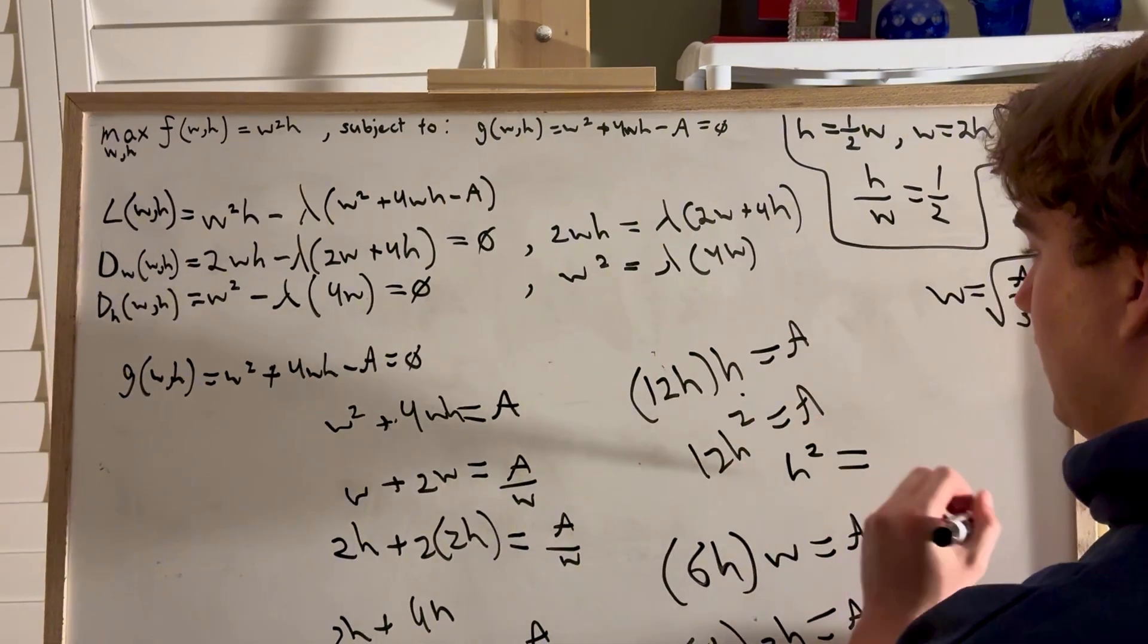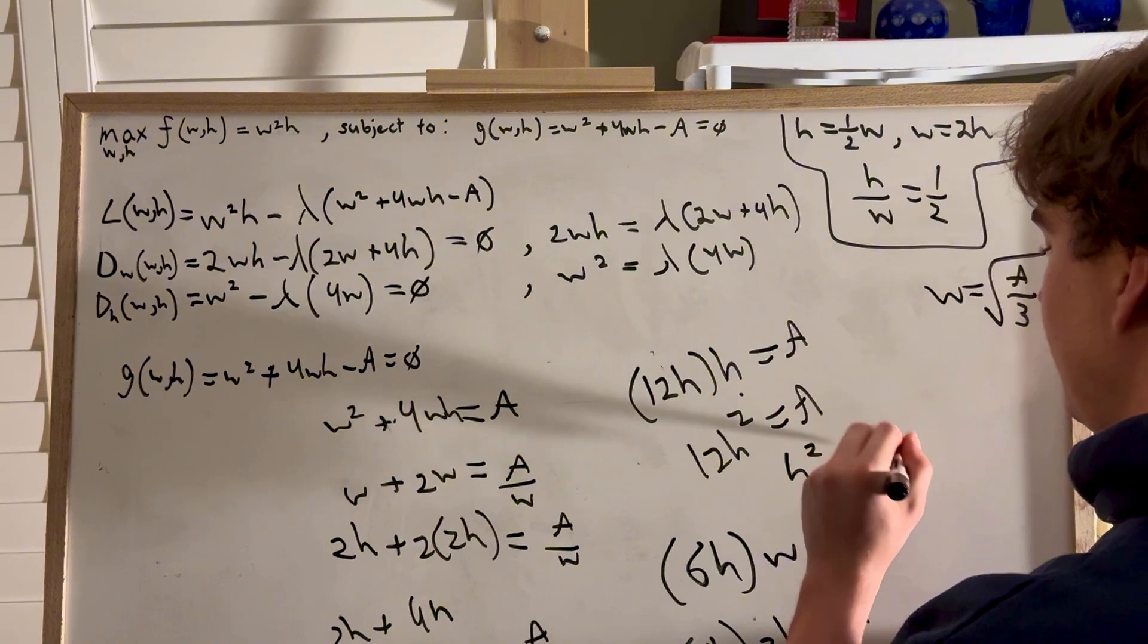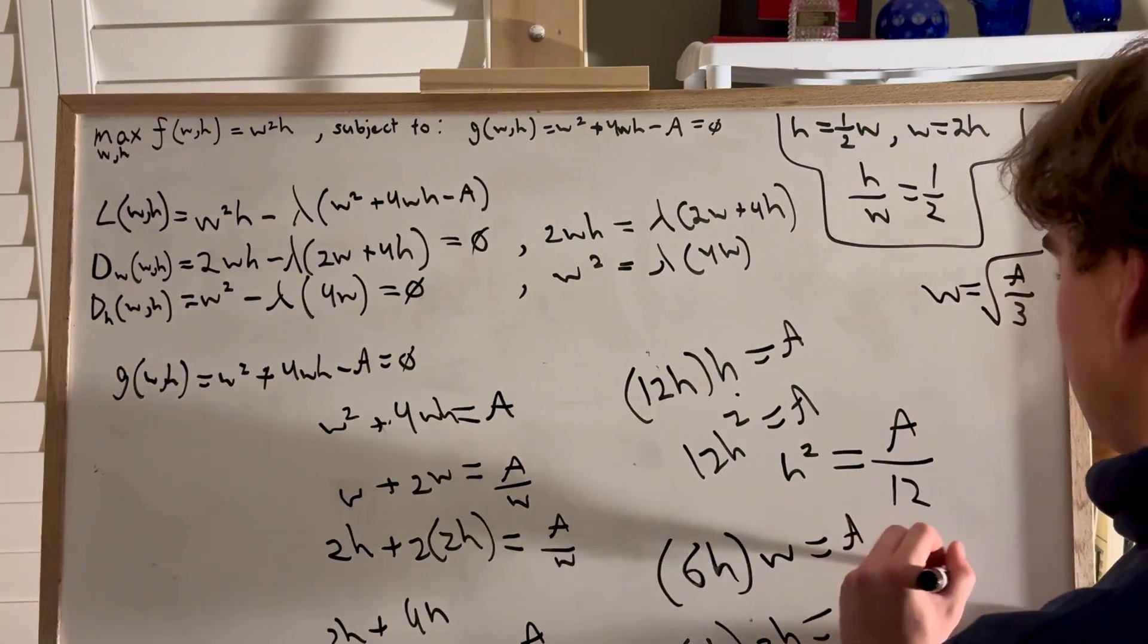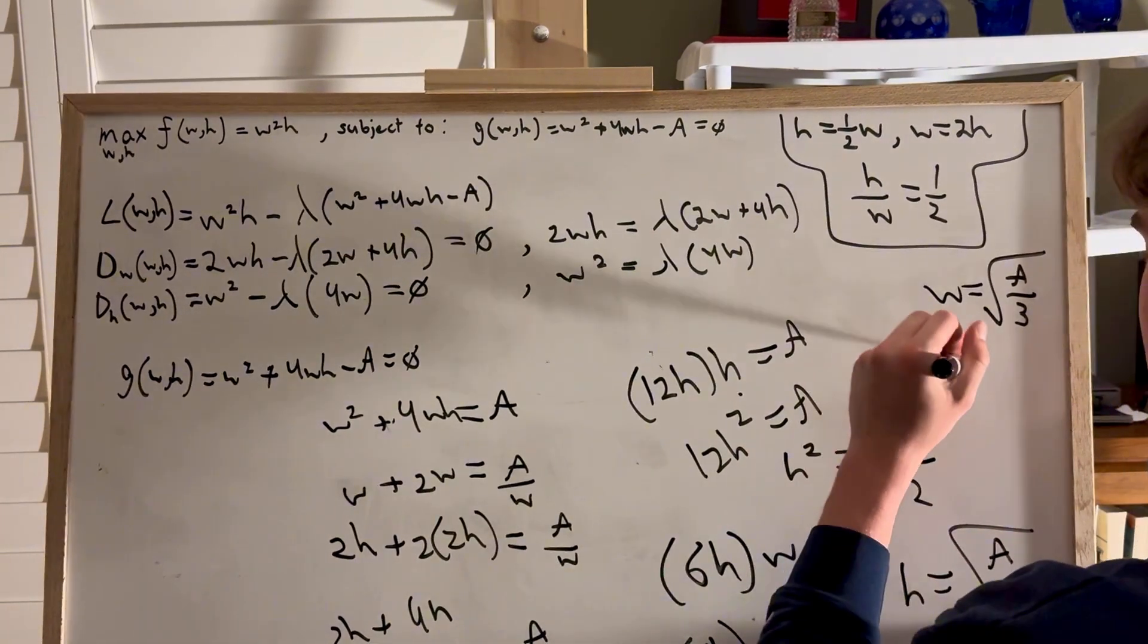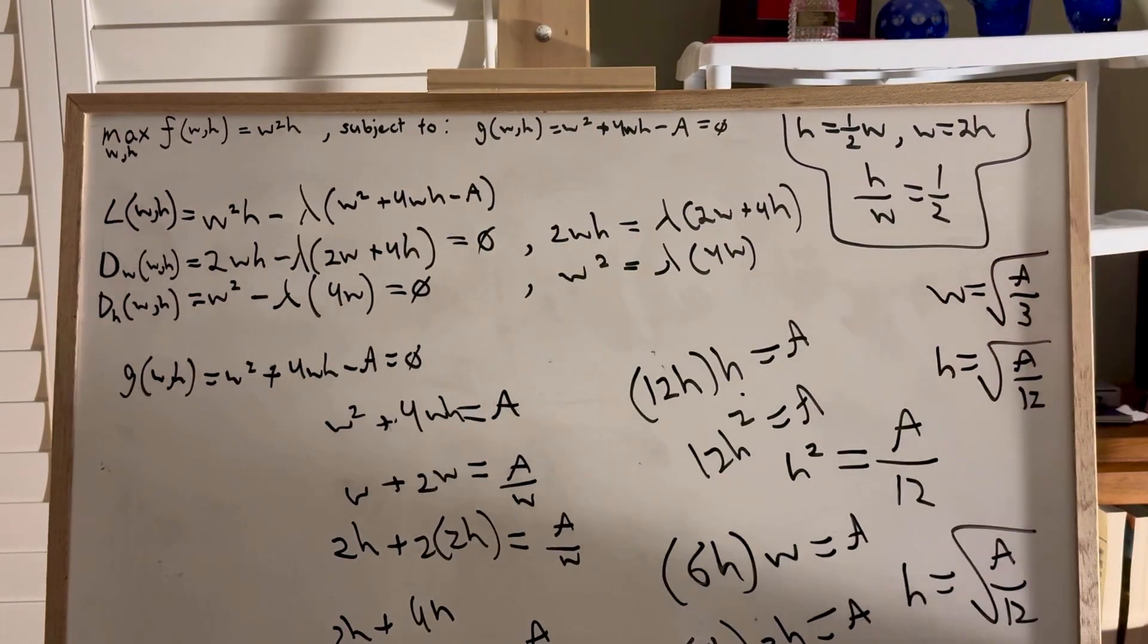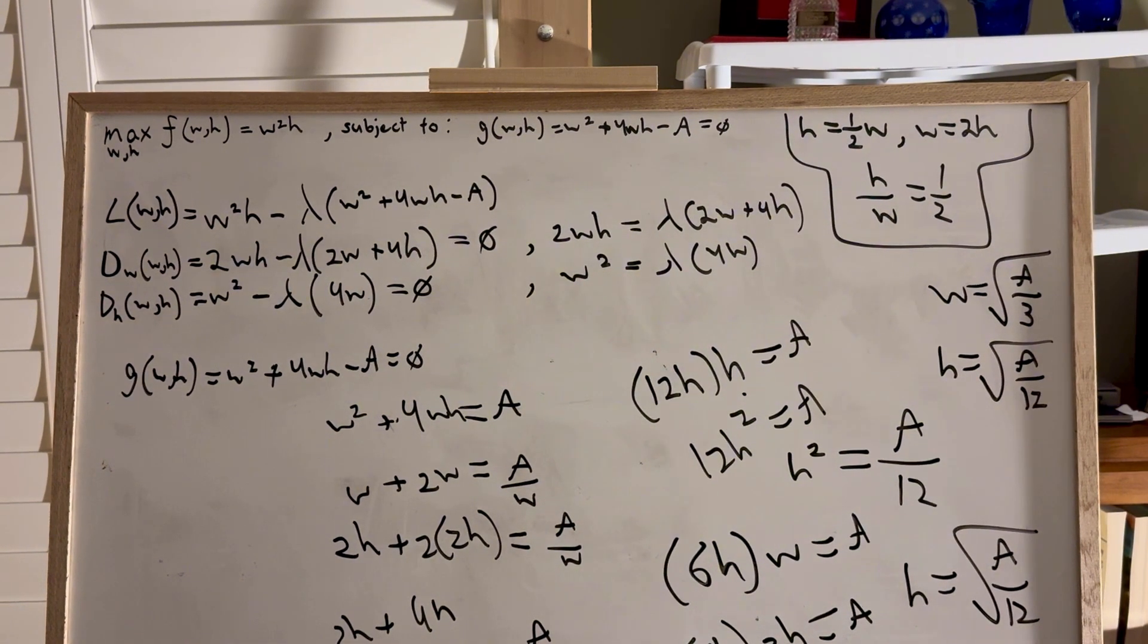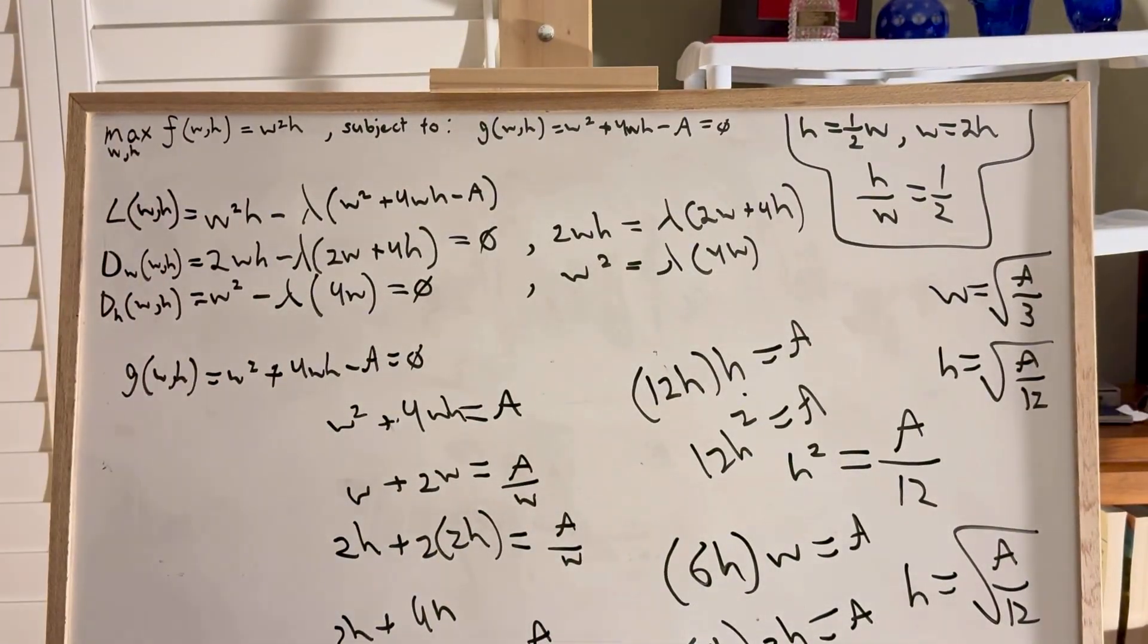Basically, h squared... Oh my God. I'm tweaking. Equals a over 12. Therefore, h is equal to the square root of a over 12. And we have our answer. I don't know why I was losing my mind there for a bit, but you've just got to believe me that I was cooking. And I was. These are both correct. These are both correct. And we're done. That's it.